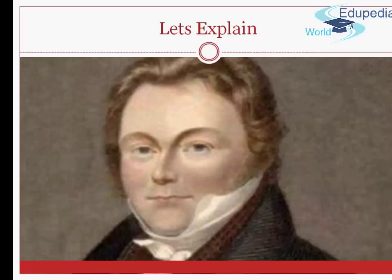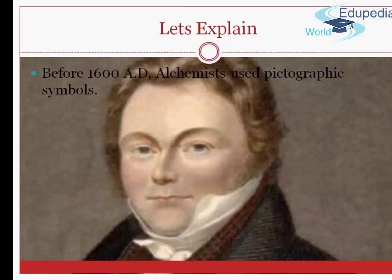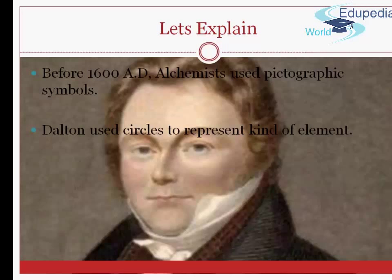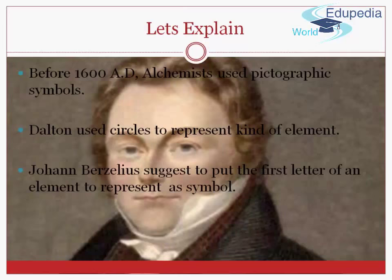So friends, let's conclude this. Before 1600 AD, alchemists used the pictographical symbols. Then, Dalton used the circles to represent the elements. And finally, Johan Berzelius suggested to put the first letter of the element to represent them as symbol. So what is symbol?